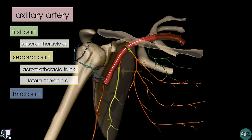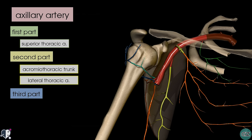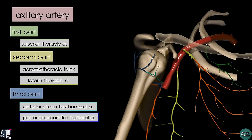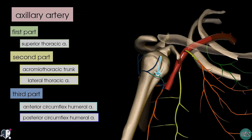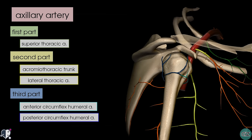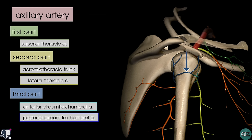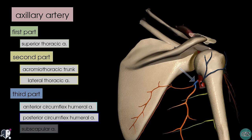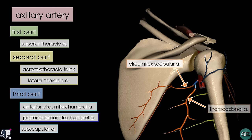The third part gives off three arteries: the anterior and posterior circumflex arteries, and the subscapular artery. You can see the anterior circumflex humeral artery in light blue, running in front of the surgical neck of the humerus and anastomosing with the posterior circumflex artery. Rotating fully around to the back, you can see the subscapular artery coming off. The subscapular artery is the largest branch of the axillary artery, and its two branches are the scapular circumflex artery and the thoracodorsal artery.